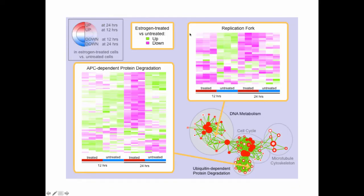You can also go into an enrichment map and see a heat map visualization of the gene expression data. You can click on nodes to see that indeed, ubiquitin-dependent or APC-dependent protein degradation is very similar between experiment and control at the early time point, but very different at the late time point. Very quickly you can see that most pathways are the same, with just a couple of areas changing between the two time points.